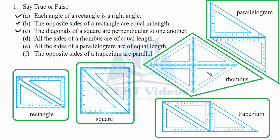Part D - all the sides of a rhombus are of equal length. A rhombus is made up of 30-60-90 set squares. You can see here that all the sides of a rhombus are equivalent because the common side is shared by the four set squares. Therefore it is true.